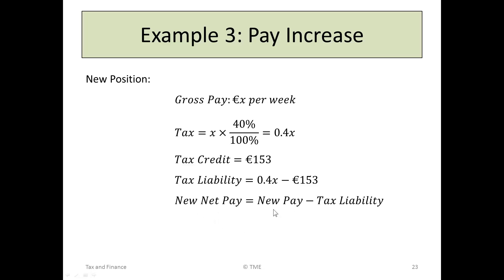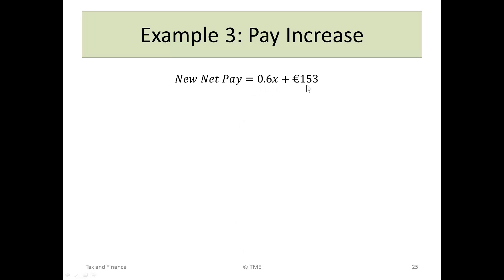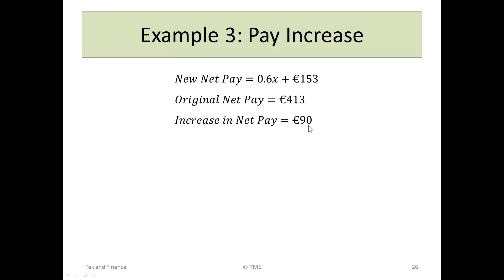His new net pay will be his new gross pay minus the tax liability: X minus (0.4X minus €153). Multiplying that out, X minus 0.4X is 0.6X, and minus by minus makes a plus, so John is now taking home 0.6X plus 153. We were also told his new take-home pay was €90 better than before. Originally he was on €413, so €413 plus €90 is €503. His new net pay must be €503.